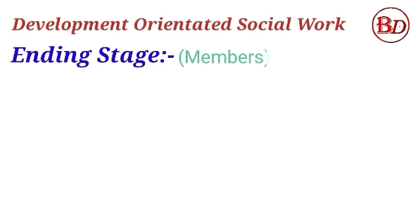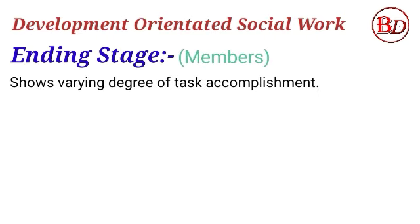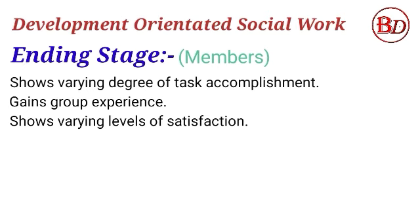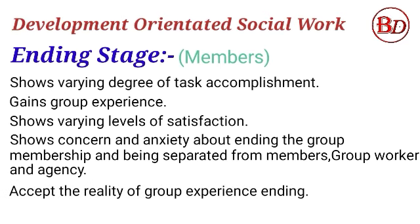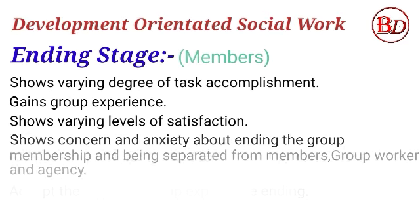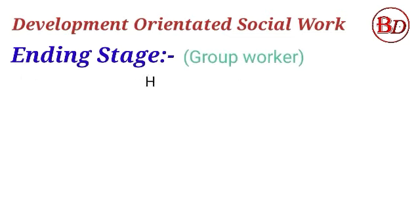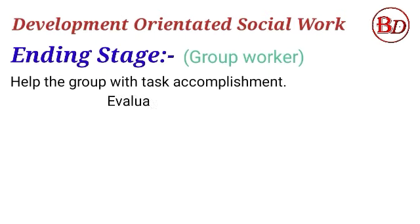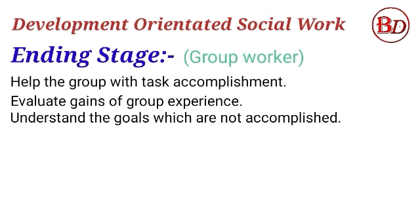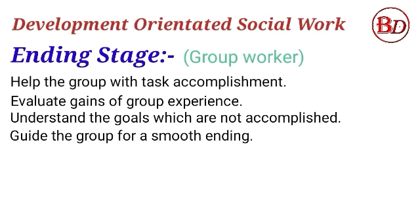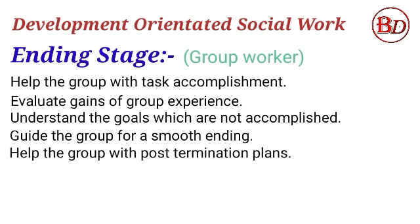Ending stage: Members show varying degrees of task accomplishment and gain group experience. They show varied levels of satisfaction and concern or anxiety about ending group membership and being separated from group members, the social worker, and agency. The group accepts the reality of the group experience ending. The social worker helps with task accomplishment, evaluates gains of group experience, addresses goals not accomplished, guides the group for a smooth ending, and helps with post-termination plans.